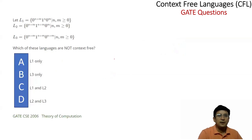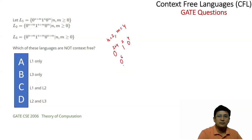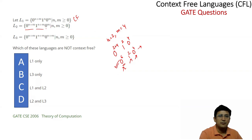Now let's check this question: L1 = {0^(n+m) 1^n 0^m}. Taking n=2 and m=4 as an example, this becomes 0^6 1^2 0^4. We can observe that the count of leading 0s equals 1s plus trailing 0s. Using a stack, we can push 0s, pop for each 1, and pop for each trailing 0 until the stack is empty. So L1 is a context-free language.